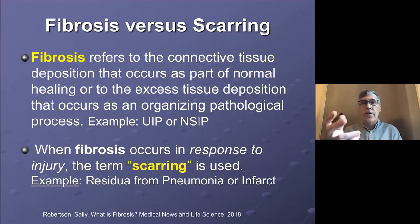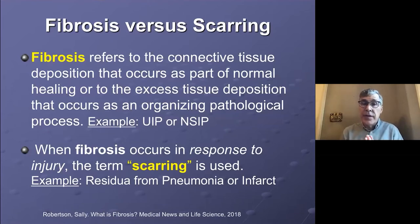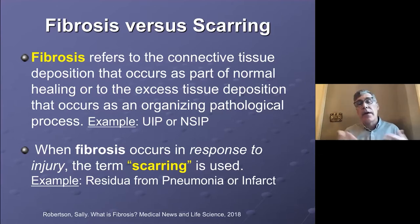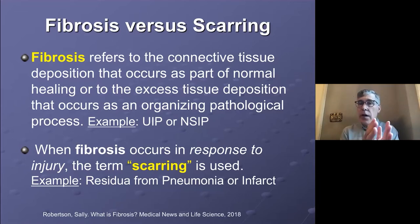Let's define fibrosis. Fibrosis refers to connective tissue deposition and is part of normal healing. It's usually seen as an organizing pathologic process — examples include usual interstitial pneumonitis and NSIP. As opposed to scarring, which is also fibrosis, but secondary to an injury, such as residual from a prior necrotizing pneumonia or infarct leaving a scar.